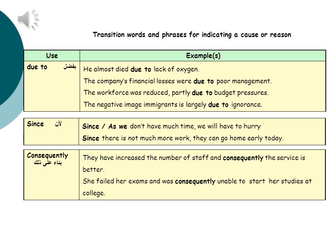In this second slide on transition words and phrases for indicating a cause or reason, we start with more examples for 'due to'. He almost died due to lack of oxygen. The company's financial losses were due to poor management. The workforce was reduced partly due to budget pressures. The negative image of immigrants is largely due to ignorance. Notice that we have a noun phrase after 'due to'; it is not followed by a clause in any of the four examples.